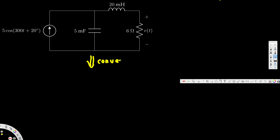When we convert to phasor, this sinusoidal current source is going to become a phasor value — we pick up the amplitude and also the angle, so this is going to be 5∠20 degrees.